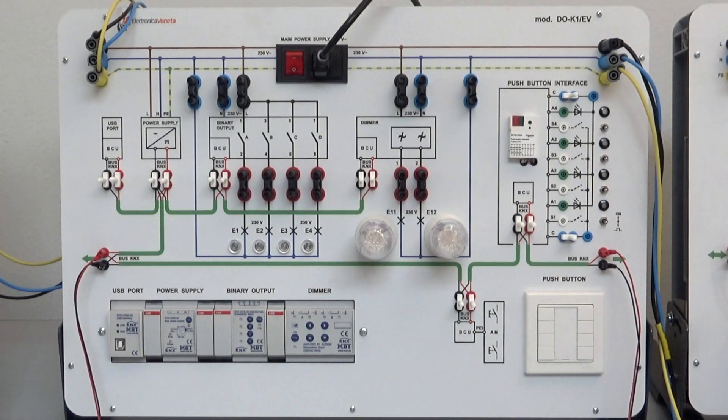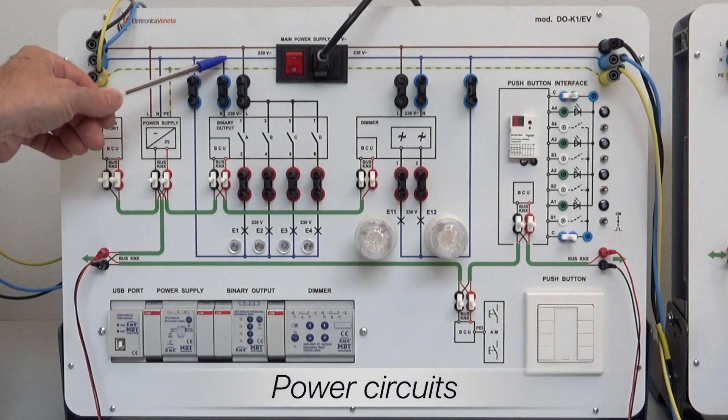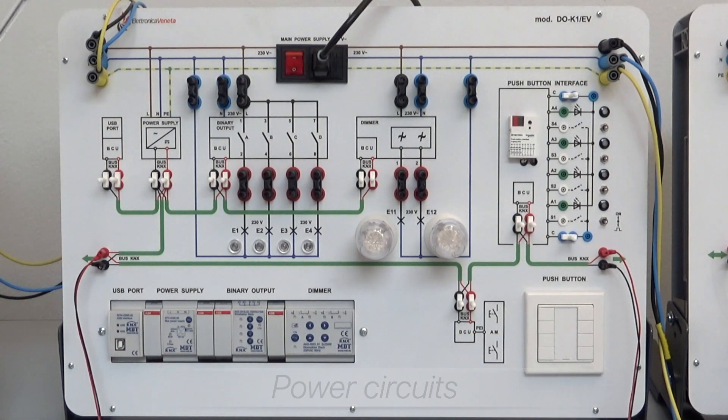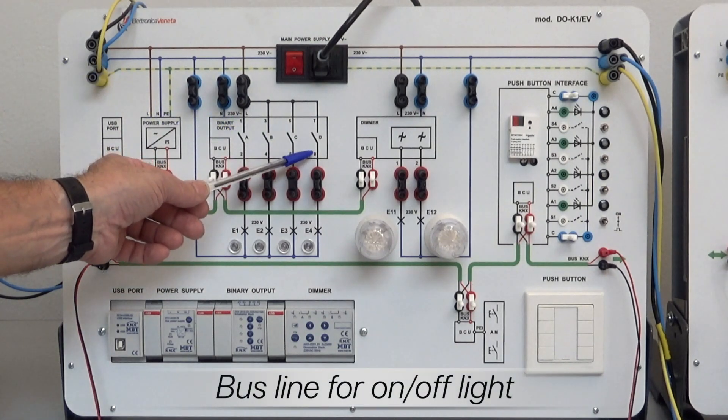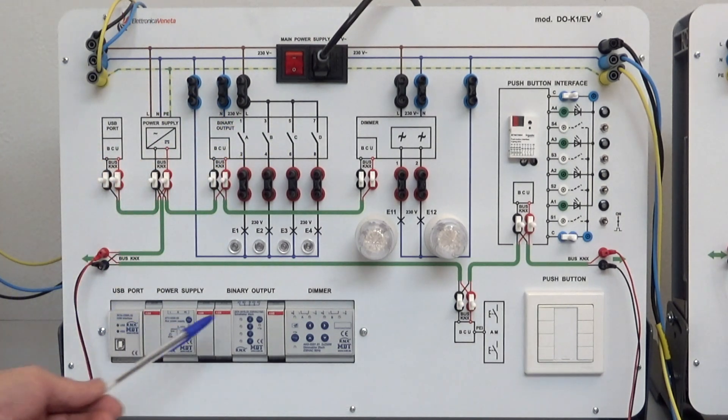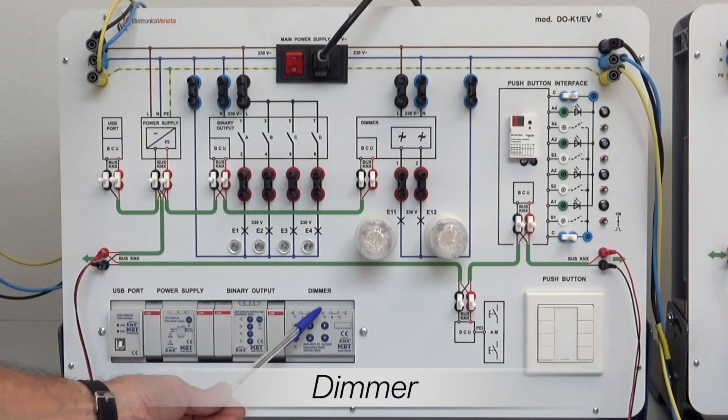The DOK1 module is the core unit of the system. It includes power circuits, bus line for on-off light and light dimming control.